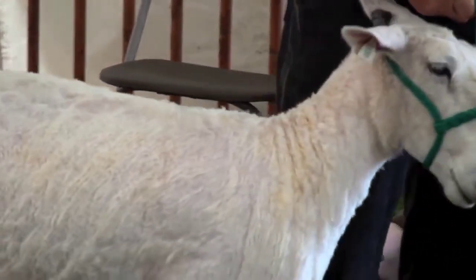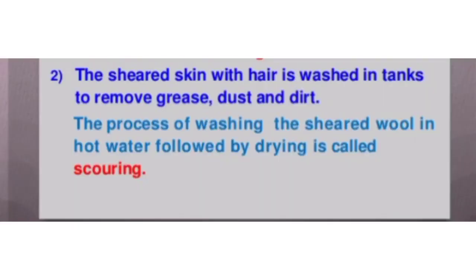The second step is scouring. The sheared skin with hair is washed in tanks to remove grease, dust, and dirt. The process of washing the sheared wool in hot water followed by drying is called scouring. Nowadays scouring is done by machines.